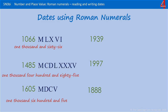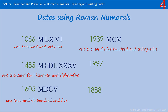The next date, 1939 — the beginning of World War II. We have 1000. 900 — remember that's 100 less than 1000, so that's CM. 30 is 3 lots of 10, and 9 is 1 less than 10.